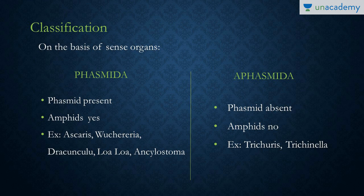As I told you in my previous lesson, we'll be talking about classification of Nemathelminths, which is based on sense organs — specifically the phasmids. Phasmids are sense organs present on the posterior part of the nemathelminths or round worms. Classification gives us two classes: Phasmida, in which the phasmid is present, and Aphasmida.